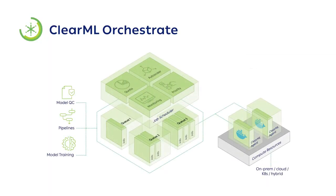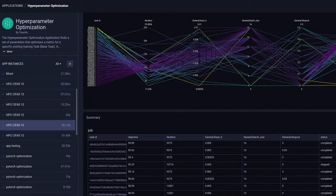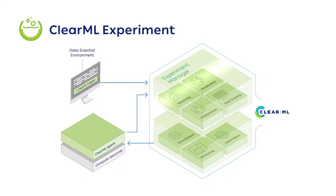Tired of running after your machines? Let them run after you thanks to ClearML Orchestrate, giving you full control over your hardware as well as up-to-date status of what's running, what's idling, and what's the expected workload. It also allows you to weave experiments into pipelines and run advanced automations such as hyperparameter optimization and continuous training. And thanks to its seamless and built-in integration to the Experiment Manager, sending jobs for execution is only three clicks away.